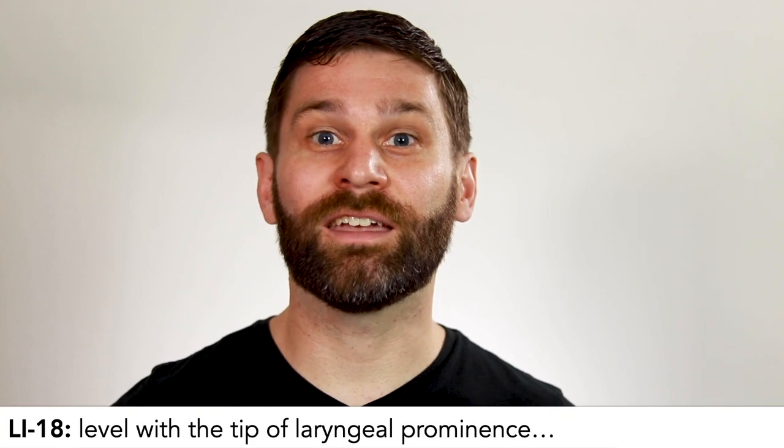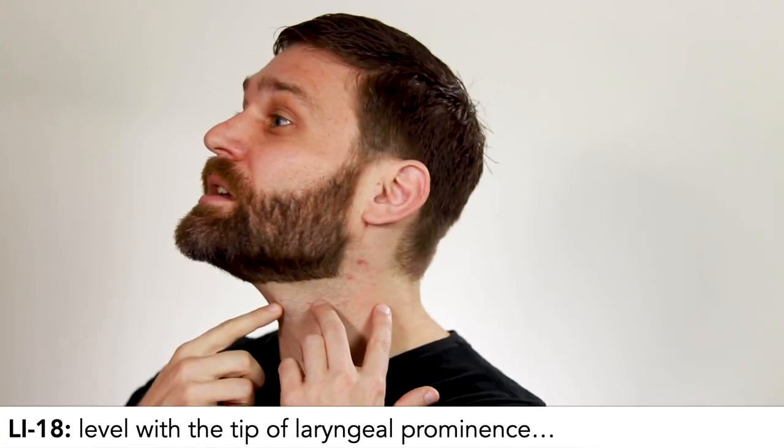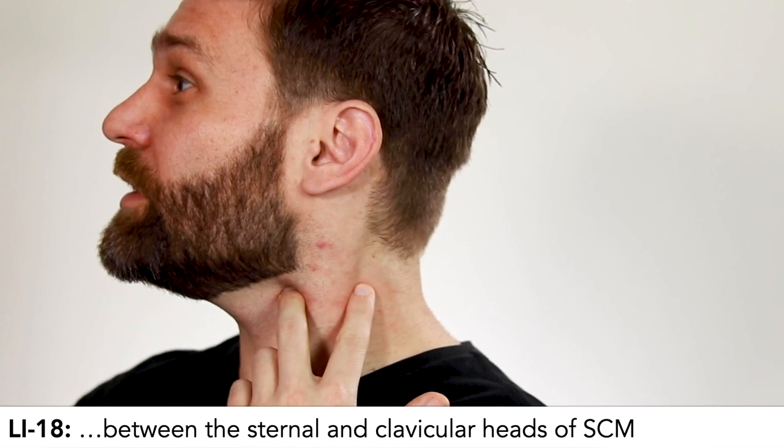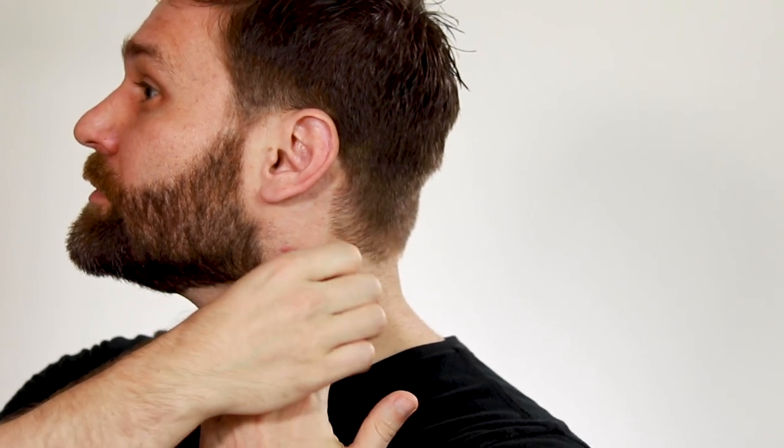Next we're coming to the neck, and we're actually going to find LI18 first. LI18 is level with the laryngeal prominence between the sternal and clavicular heads of the SCM. If you're having trouble finding the SCM, one thing you can do is have the person turn the head all the way to the side, and this will make the SCM pop out. But if you're doing it this way, make sure that after you find the borders, you have the person turn their head back straight and then put the sticker on. Because this muscle actually moves a lot, so if you turn the head and put the sticker on here, by the time you turn the head back, the sticker might be in the wrong place.